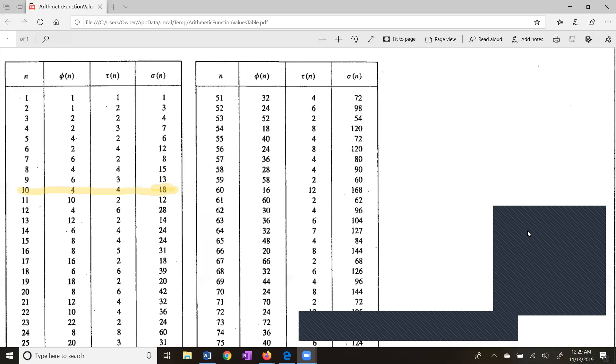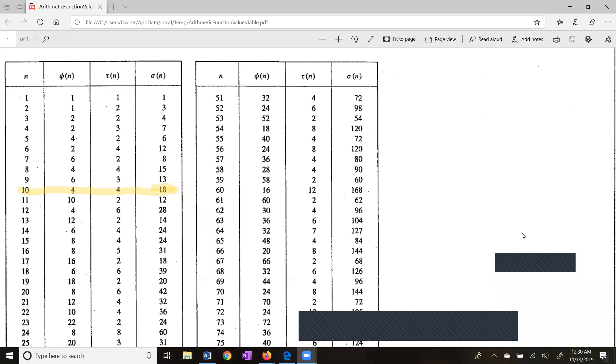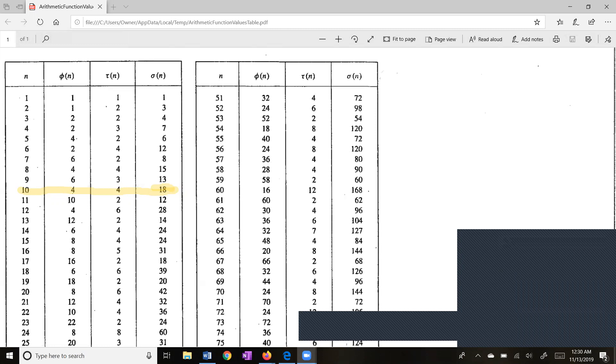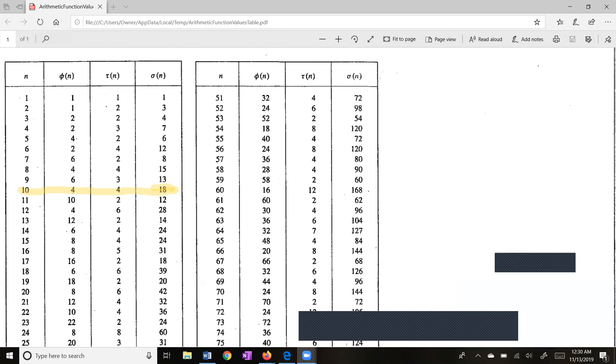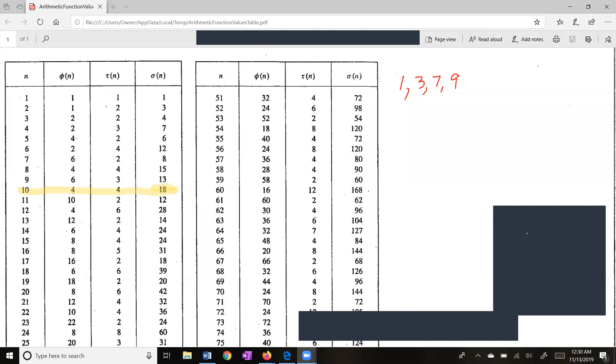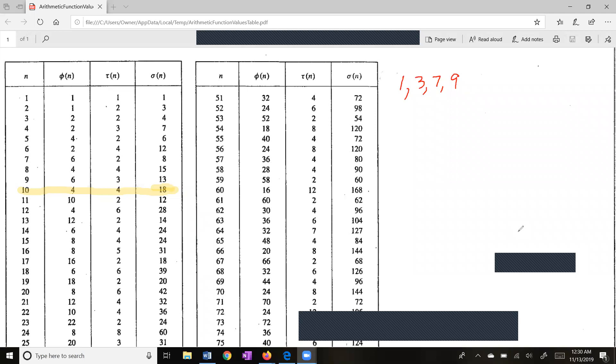First of all, phi of 10. Phi of 10 would be the number of positive integers relatively prime to 10. You might see if you can list the numbers relatively prime to n. The numbers that are relatively prime to 10 are 1, 3, 7, and 9. There are four of those. So phi of 10 is 4.